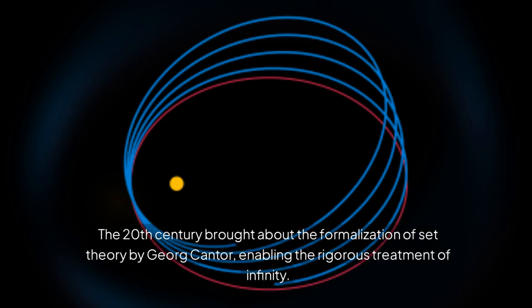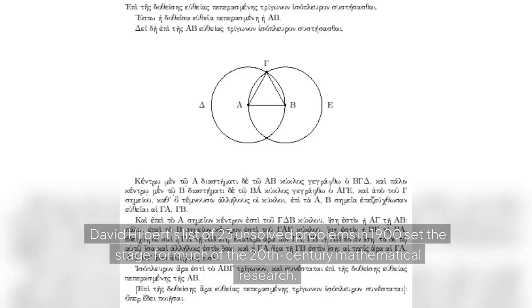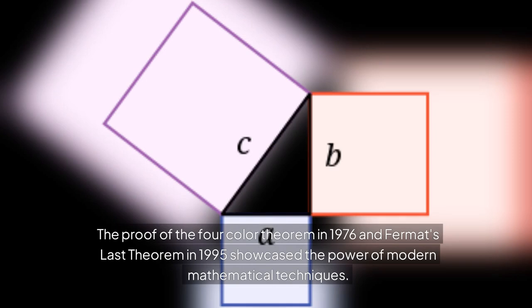The 20th century brought about the formalization of set theory by Georg Cantor, enabling the rigorous treatment of infinity. David Hilbert's list of 23 unsolved problems in 1900 set the stage for much of the 20th century mathematical research. The proof of the four-color theorem in 1976 and Fermat's last theorem in 1995 showcased the power of modern mathematical techniques.